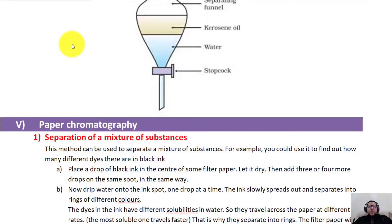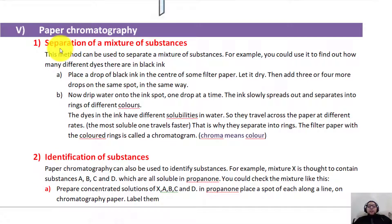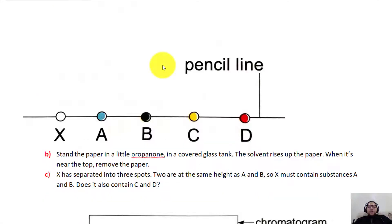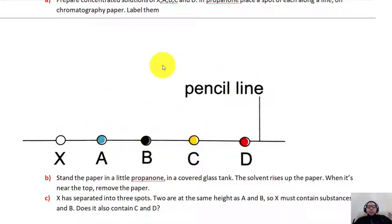Now we're going to talk about chromatography. Chromatography is a way to separate a mixture of solids which are dissolved in one particular solvent. This method can be used to separate a mixture of substances — for example, to find out how many different dyes there are in a black ink. The main objective of today's lesson is to separate different solids dissolved in one particular solvent, such as colors.